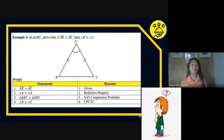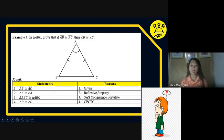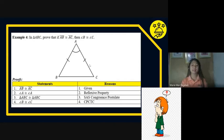Example number 4: in triangle ABC, prove that if segment AB is congruent to segment AC, then angle B is congruent to angle C. Here is the proof. Statement 1: segment AB is congruent to segment AC — given. Statement 2: angle A is congruent to angle A — reflexive property, one of the properties of congruence. Statement 3: triangle ABC is congruent to triangle ACB by the SAS congruent postulate — side, angle, side. Therefore, angle B is congruent to angle C by CPCTC — corresponding parts of congruent triangles are congruent.